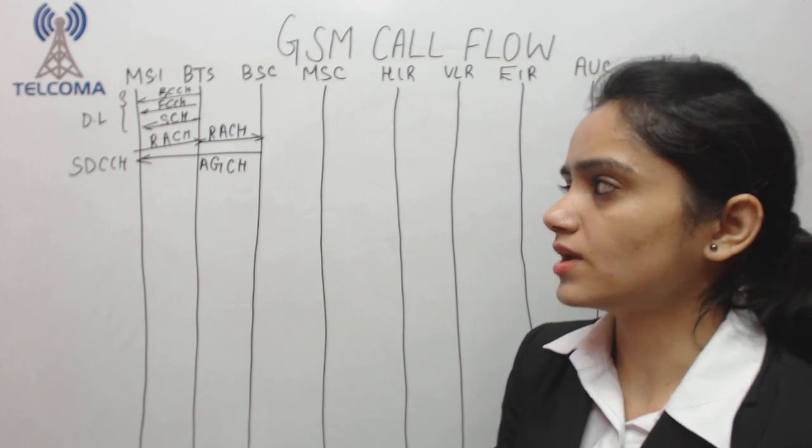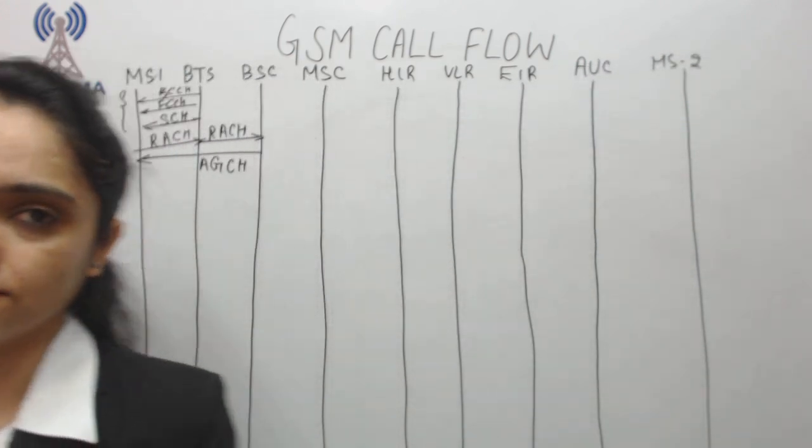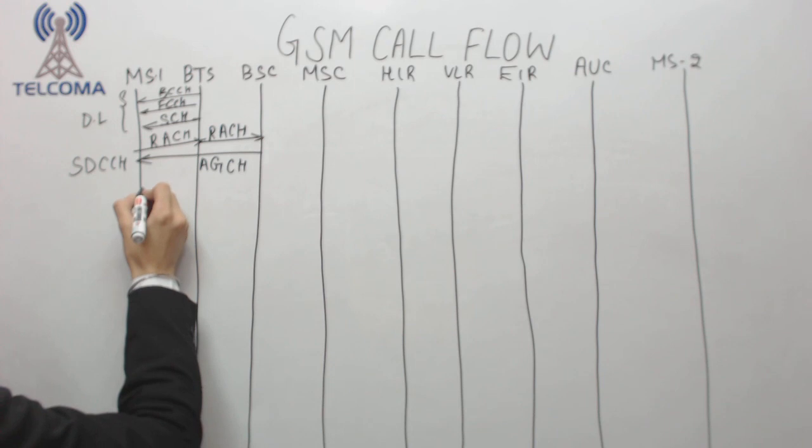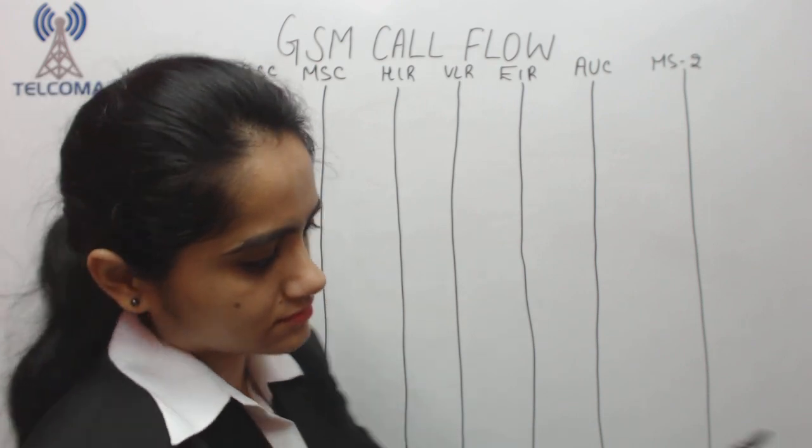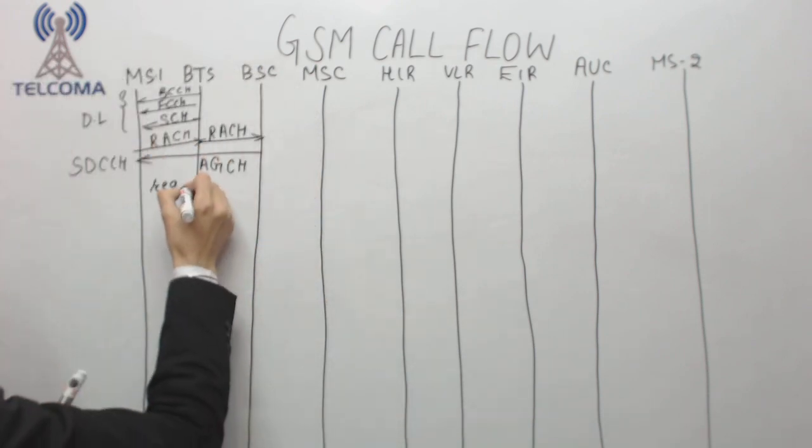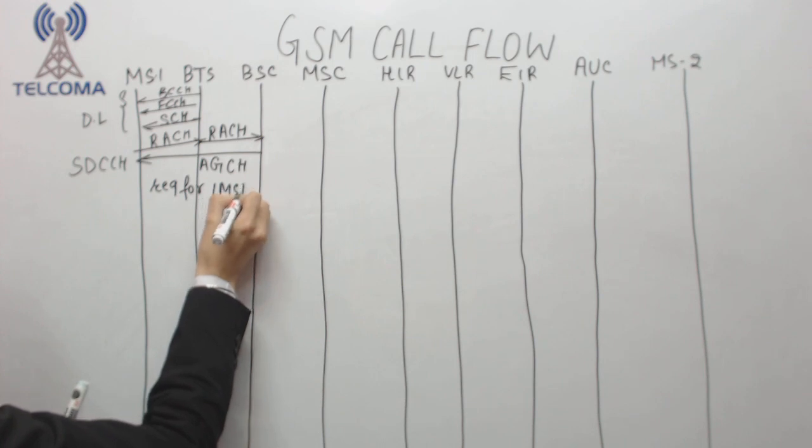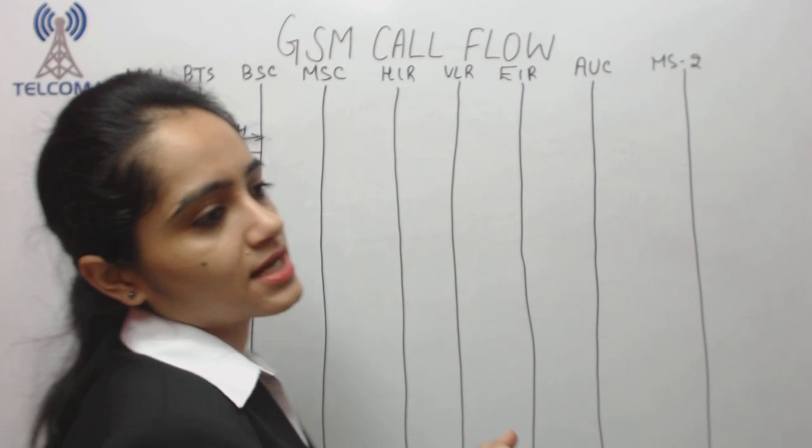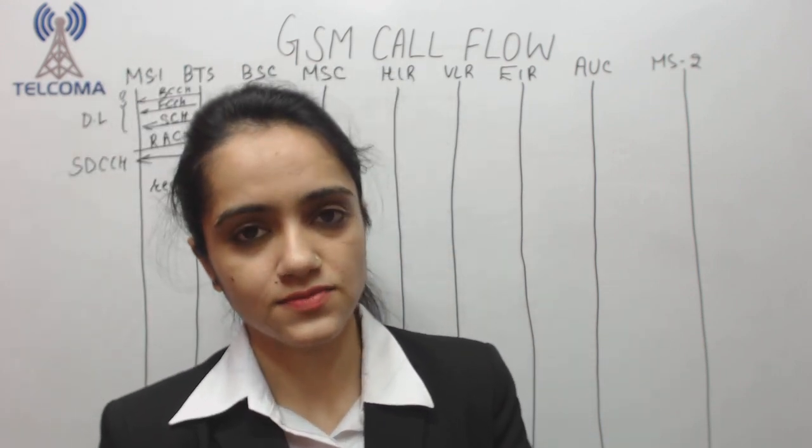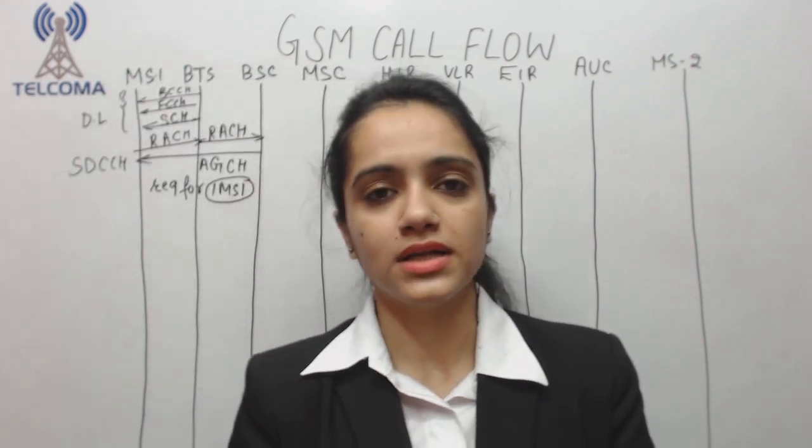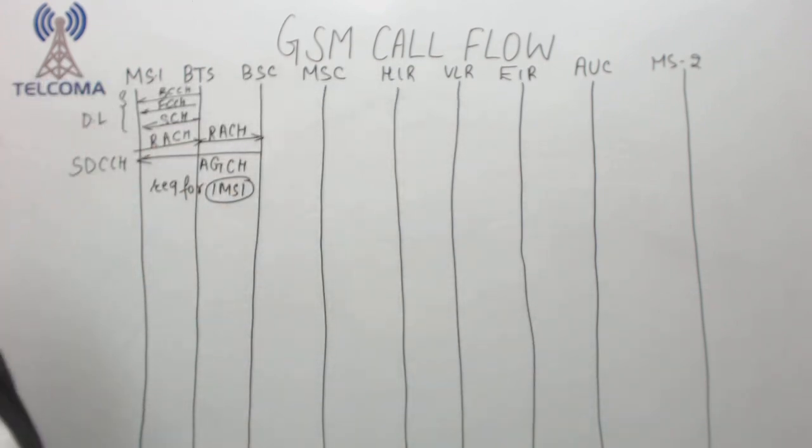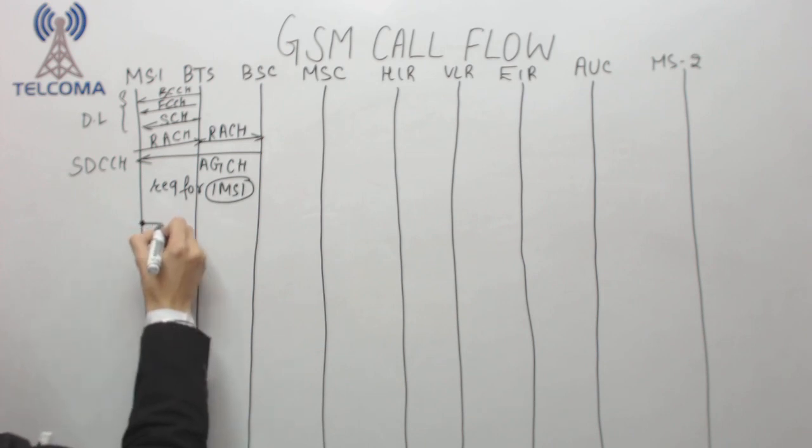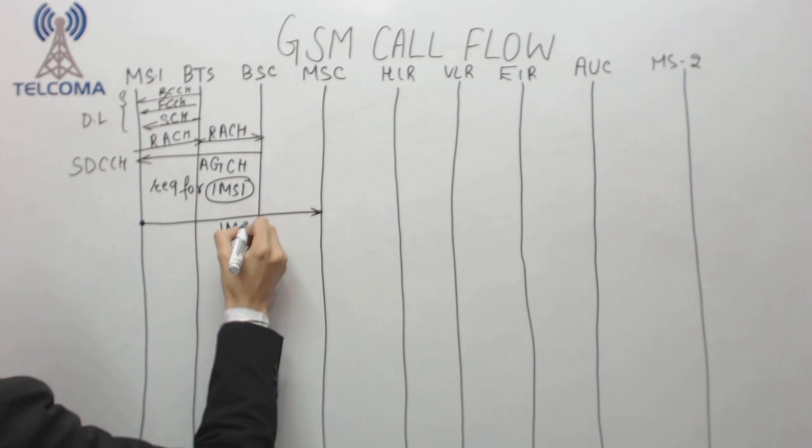SDCCH has to carry each and every information. With SDCCH we have a message request for IMSI. IMSI is International Mobile Subscriber Identity, which we will cover in GSM identified class. IMSI is the International Mobile Subscriber Identity stored in the SIM card. Mobile station will send IMSI from BSC to MSC.